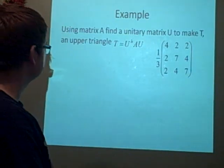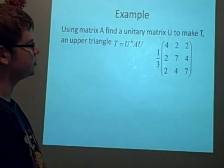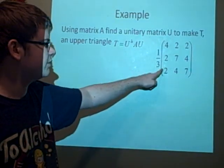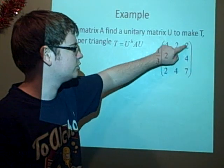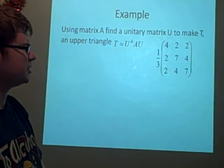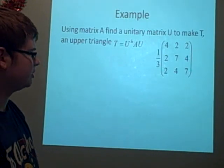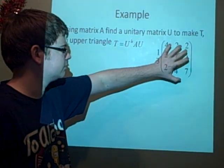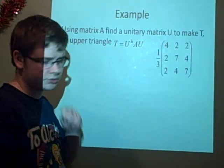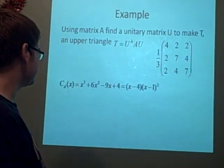This is our example. We want to find the U to make the upper triangle T for this matrix here: [4 2 2; 2 7 4; 2 4 7]. This is one from a past paper. I don't get the same unitary matrix, but it still works. First thing we want to do is find the characteristic polynomial so we can find the eigenvalues, and this is the characteristic. We get x^3 + 6x^2 - 9x + 4 = (x - 4)(x - 1)^2.